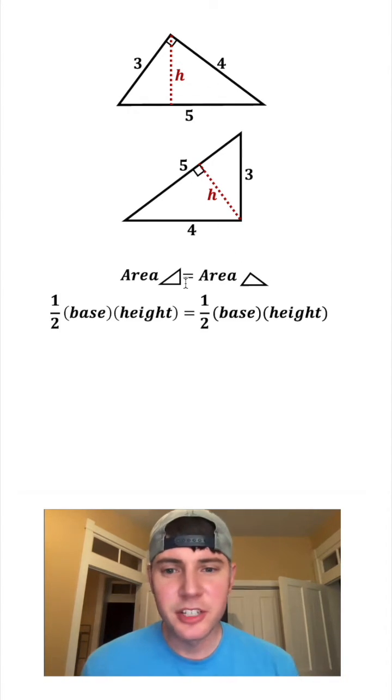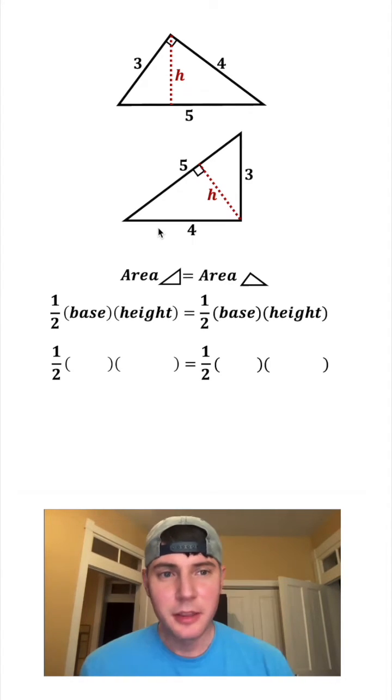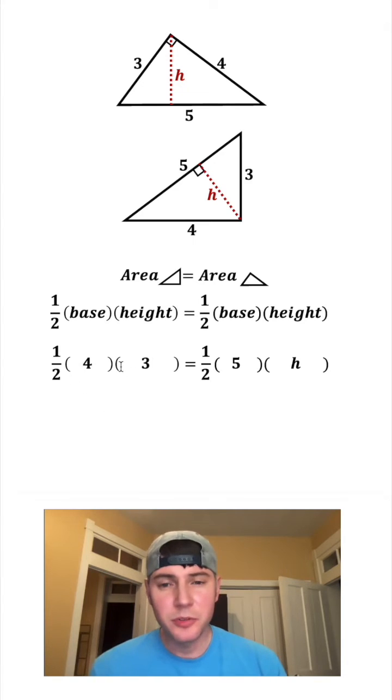The area of a triangle is equal to one-half base times height, so let's plug in the bases and the heights. The base of this lower triangle is equal to 4, the height of this lower triangle is equal to 3. The base of this upper triangle is equal to 5, and the height of this upper triangle is the h that we're trying to solve for.